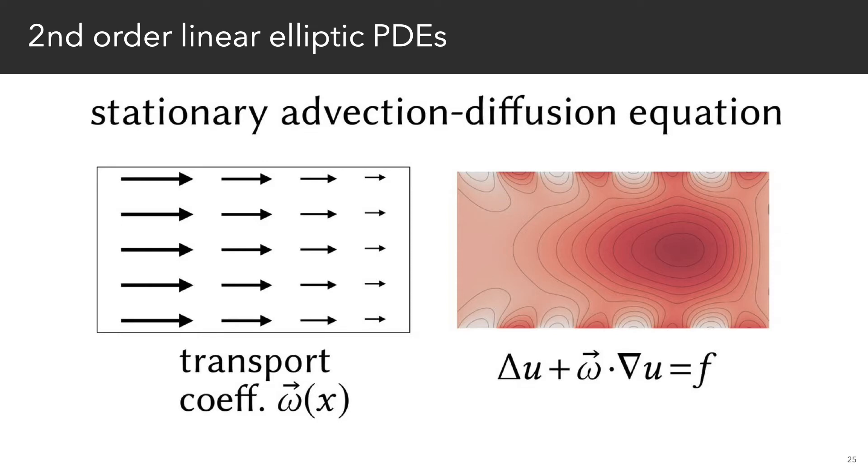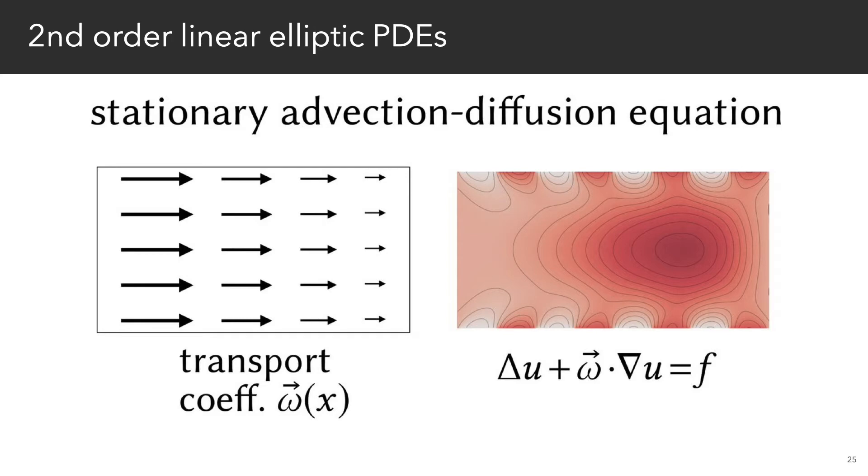Finally, an absorption term sigma u acts like a background medium that absorbs heat. Think about a heat sink or a cold engine block. The function sigma describes the strength of absorption at each point x.